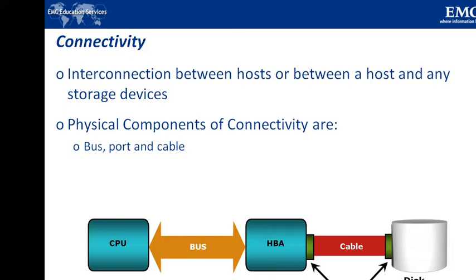The physical components of connectivity are the hardware elements that connect the host to the storage. The three physical components of connectivity between host and storage are the host interface device, port, and cable. Host interface device or host adapter connects a host to other hosts and storage devices. Examples of host interface devices are the host bus adapter (HBA) and network interface card (NIC). HBA is an application-specific integrated circuit board that performs I/O interface functions between the host and the storage, relieving the CPU from additional I/O processing workload. A host typically contains multiple HBAs.